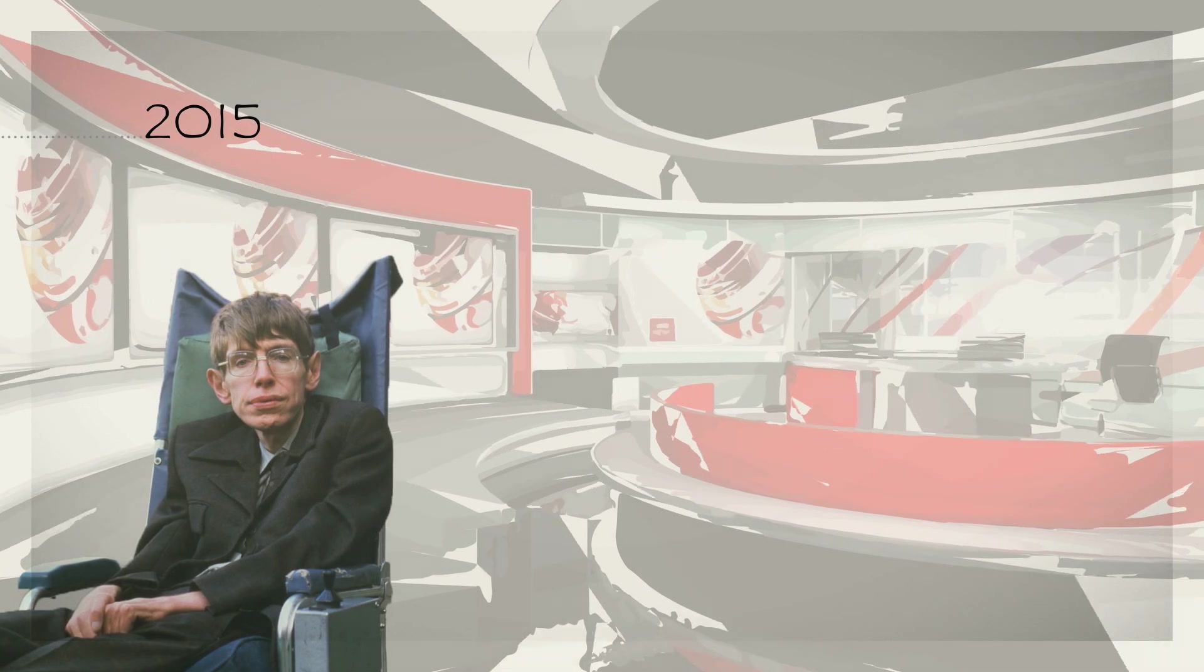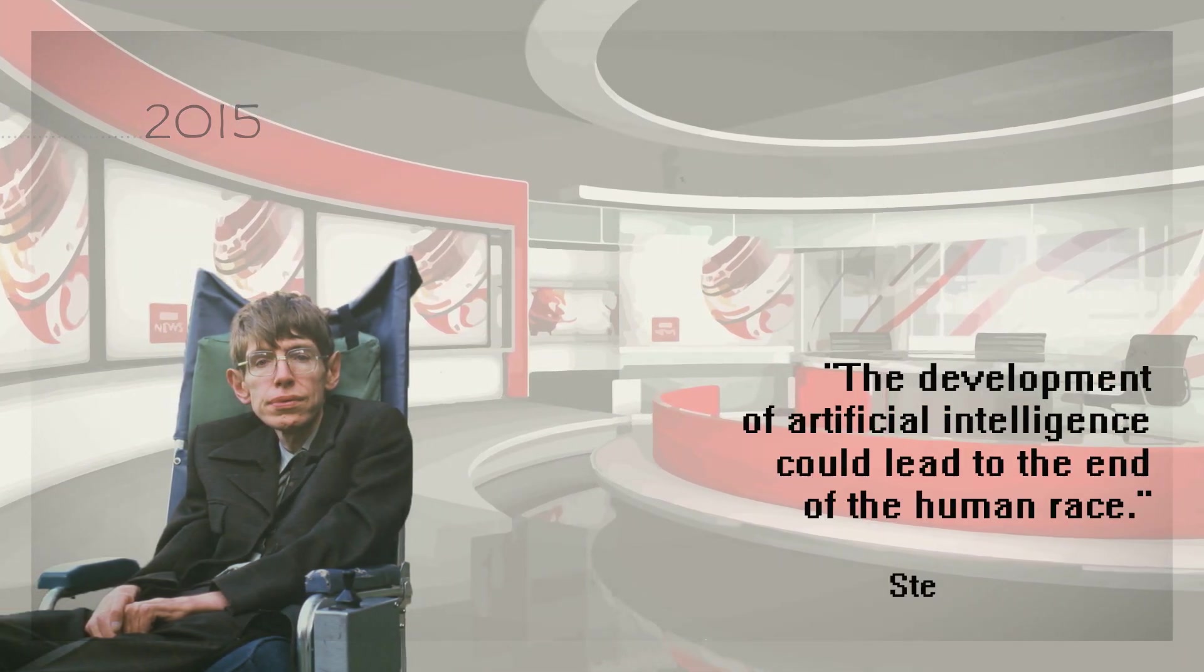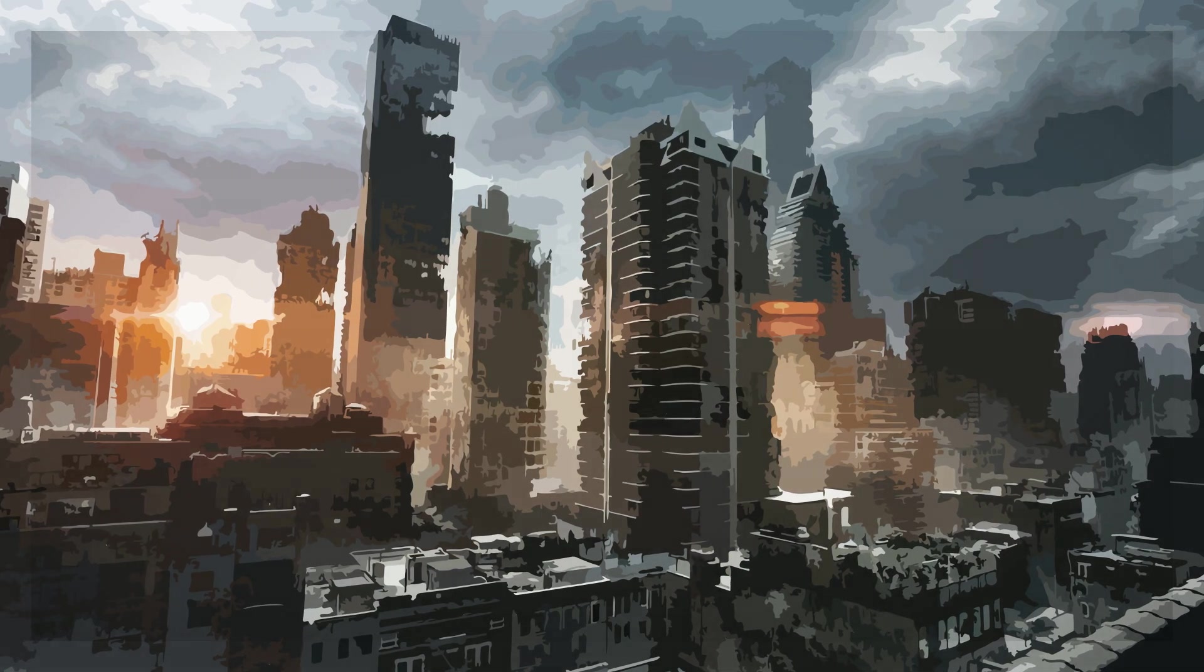In 2015, Stephen Hawking said on the BBC, the development of artificial intelligence could lead to the end of the human race. The end of humanity, the Singularity, could come about at some time around the decade of the 2040s.